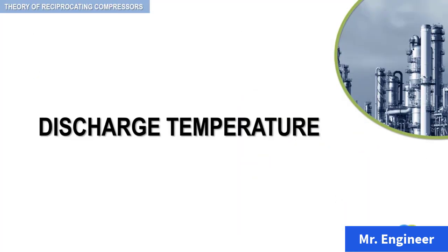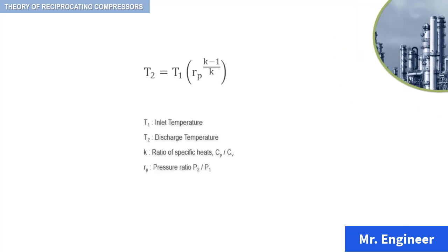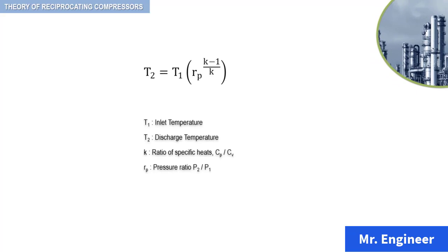The discharge temperature of a reciprocating compressor stage can be calculated using the following formula. Here, T1 is the absolute inlet temperature, T2 is the absolute discharge temperature, K is the ratio of specific heats, and RP is the pressure ratio.